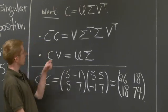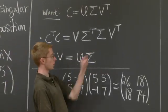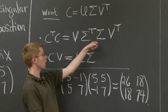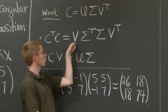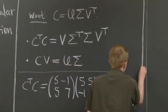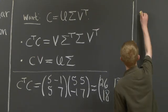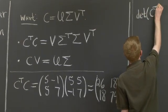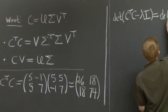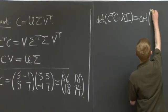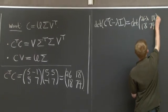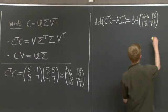Now, what you notice about this equation is this is just a diagonalization of C transpose C. So we need to find the eigenvalues. Those will be the entries of Sigma transpose Sigma, and the eigenvectors, which will be the columns of V. So how do we find those? We look at the determinant of C transpose C minus lambda times the identity, which is the determinant of 26 minus lambda, 18, 18, and 74 minus lambda.